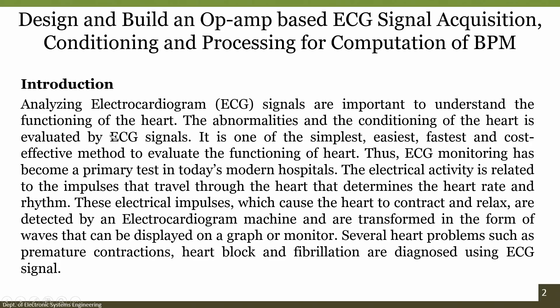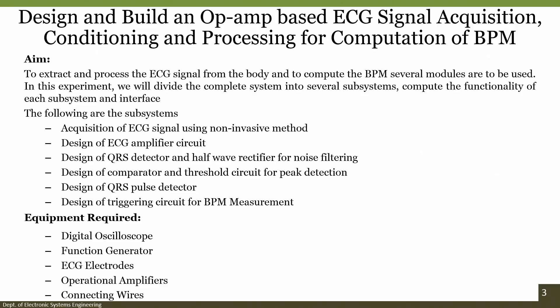The aim of this experiment — because we will also see in reality how to design an electronic conditioning system consisting of acquisition, conditioning and processing in real time. The aim is to extract and process the ECG signal from the body and to compute BPM. Several modules are to be used. In this experiment, we will divide the complete system into several subsystems and compute the functionality of each. The first subsystem is the acquisition of ECG signals using a non-invasive method.